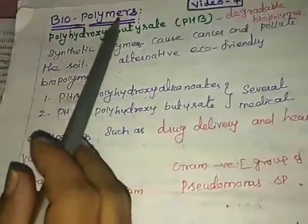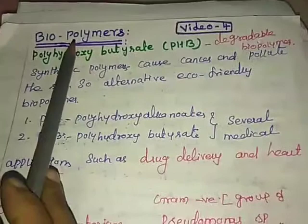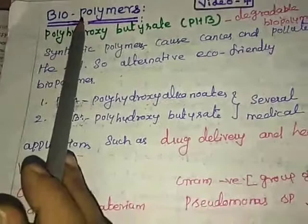We are going to see about biopolymers. Nowadays, so many problems in our environment because we are using synthetic polymers. Synthetic polymers are non-degradable and pollute the soil. Examples of synthetic polymers include plastic, nylon, polyester, etc.